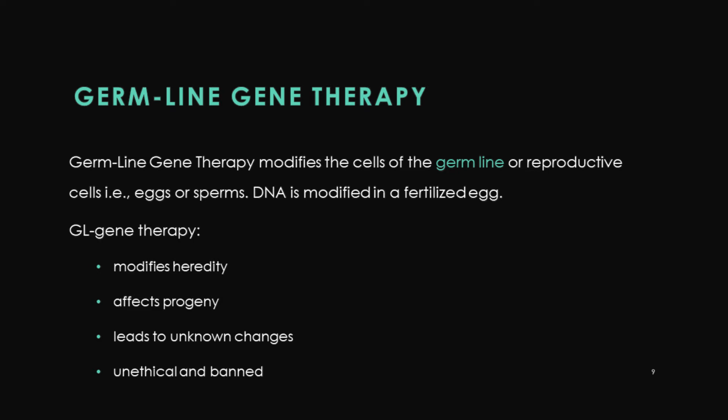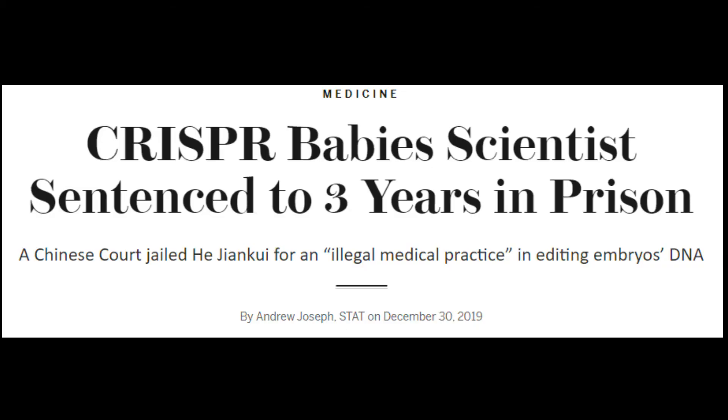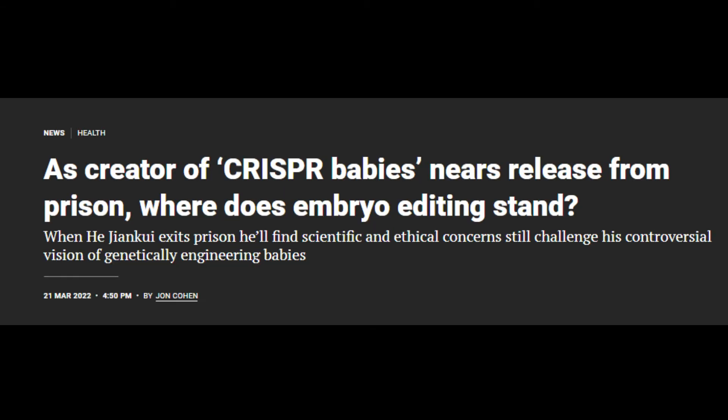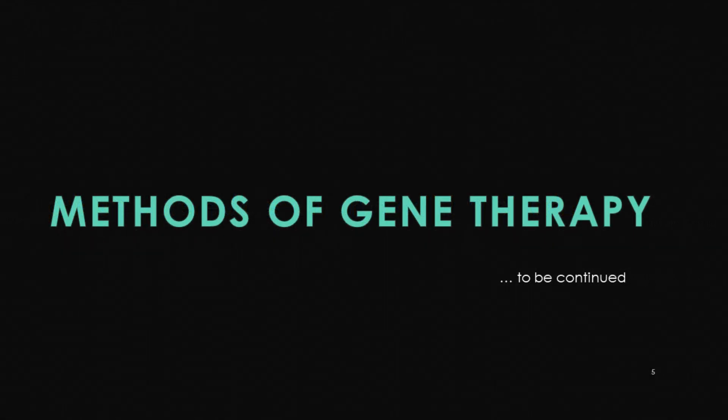So up till now we've covered what gene therapy is and the two types: somatic cell therapy, which is commonly practiced, and germline therapy, which is banned — as illustrated by the scientists who attempted to CRISPR a newborn baby and are now behind bars. Moving further, we are going to discuss the two methods used to perform either somatic cell or germline therapies.